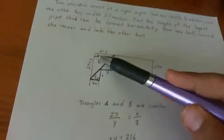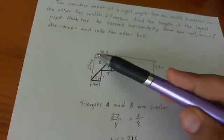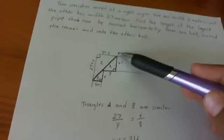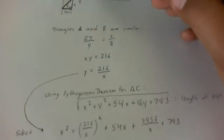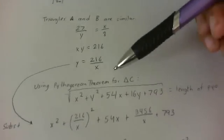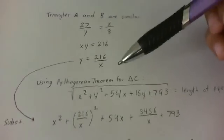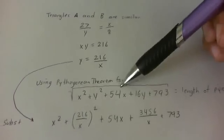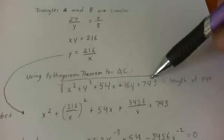Okay, and also what I did was I made this right triangle right here. So triangle C is the right triangle. This side is 27 plus X, this side is 8 plus Y. So I used the Pythagorean theorem for triangle C and I got the length of the pipe should be equal to the square root of X squared plus Y squared plus 54X plus 16Y plus 793.